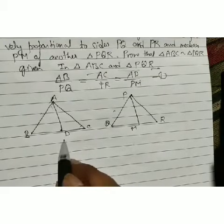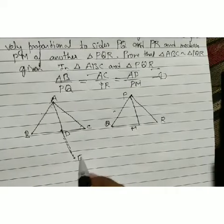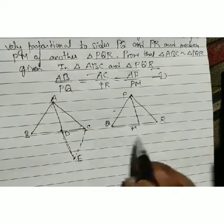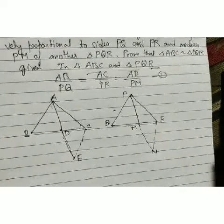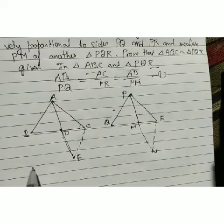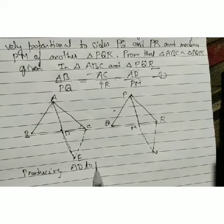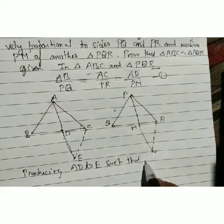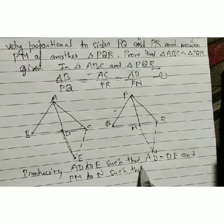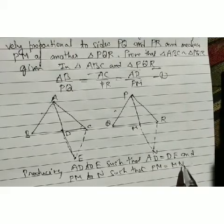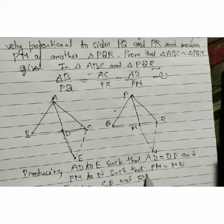Construction: We extend AD to point E such that AD = DE, and join CE. Similarly, we extend PM to point N such that PM = MN, and join NR.